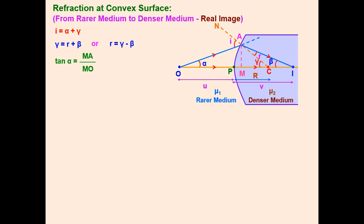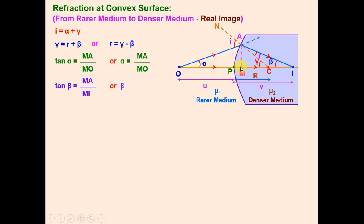Using the small angle approximation (tan θ ≈ θ), we write: tan alpha = AM/OM ≈ alpha = MA/MO; tan beta = MA/MI ≈ beta = MA/MI; and tan gamma = MA/MC ≈ gamma = MA/MC. Here MA is the common perpendicular for all three right-angle triangles formed.